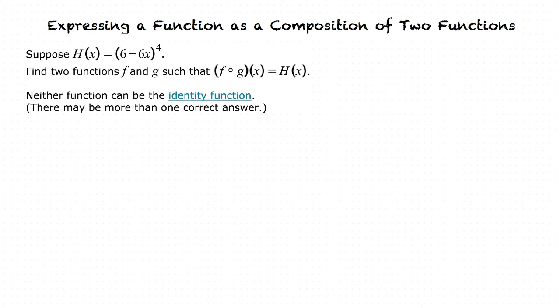What is this identity function the problem is talking about? The identity function is f of x equals x. So we know that g of x can't equal x and f of x can't equal x, based on what the problem has already told us.